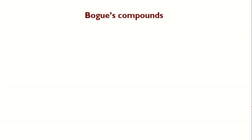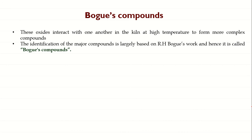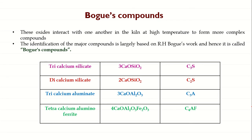Hello everyone, welcome back to my channel. In this video I will be explaining an important concept called Bogue compounds. Generally, the raw materials used for the manufacture of cement consist of lime, silica, alumina, and iron oxide. These oxides interact with one another in the rotary kiln at very high temperatures near the clinkering zone to form complex compounds. The relative proportions of these oxide compositions are responsible for influencing the various properties of cement, in addition to rate of cooling and fineness of grinding. The identification of the major compounds is generally based on R.H. Bogue's work, and hence these compounds are called Bogue compounds.